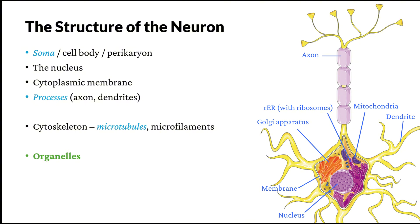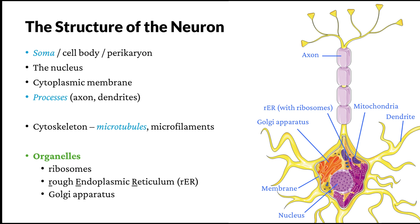Neurons also have many organelles present in other cells. Ribosomes are little organelles in charge of protein translation. We also have the rough endoplasmic reticulum, also called the Nissl bodies, where ribosomes bind to produce membrane proteins. We have the Golgi apparatus, a place for post-translational modifications of proteins. And finally, neurons have a large number of mitochondria — factories that provide ATP energy for the cell — because neurons need energy for many processes, such as producing large numbers of proteins and maintaining the ion gradient across the neuron membrane.